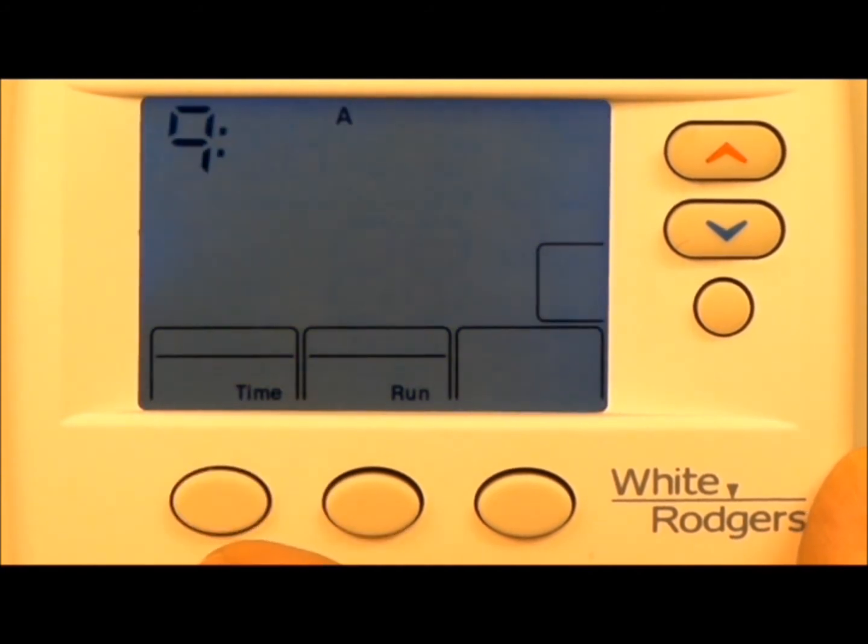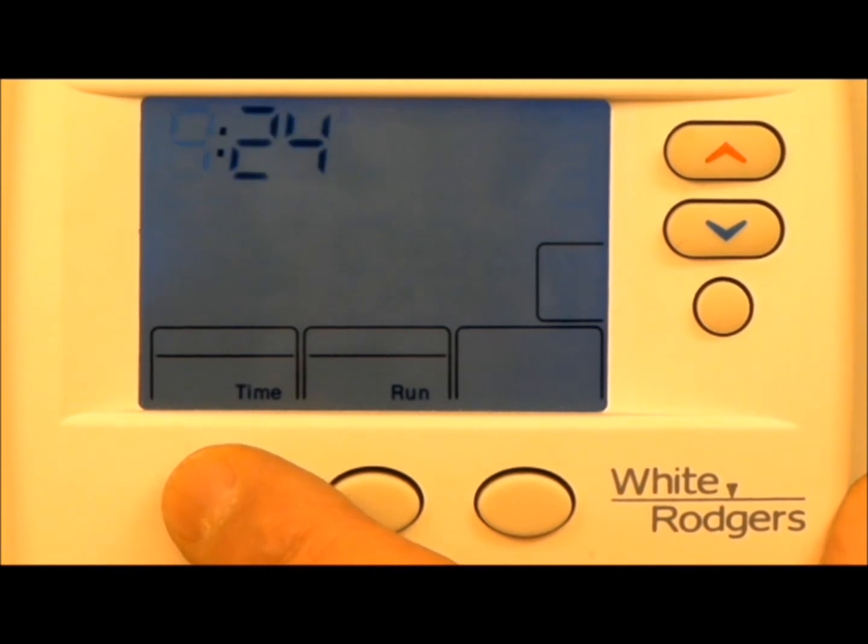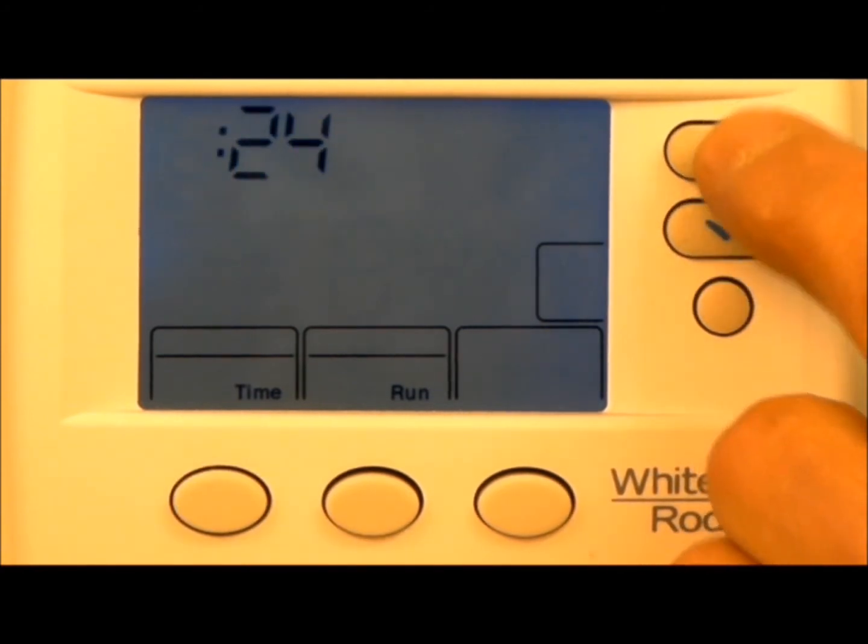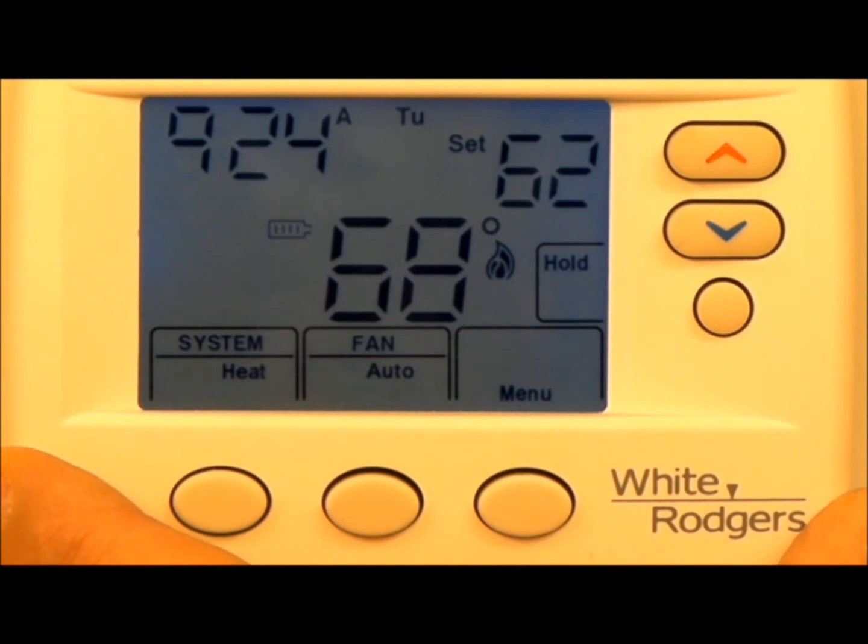To set up the time I hit the time button, up and down for my hour selection. Time again, up and down for my minute selection. Time again, up and down for my day selection. When I am finished with the time I hit run. It will now bring you back to the main face.